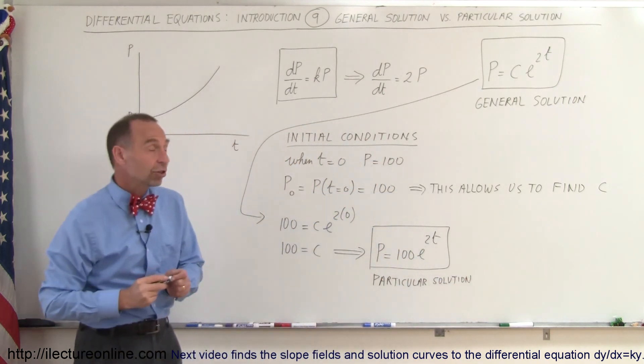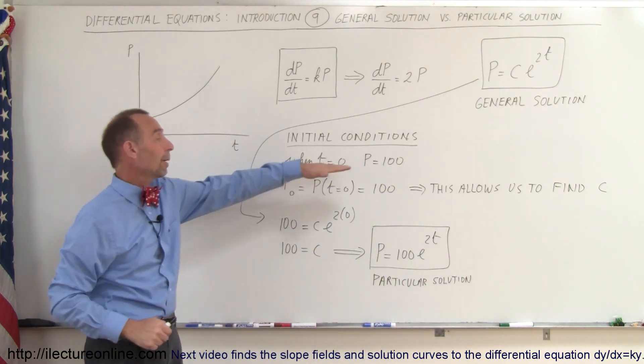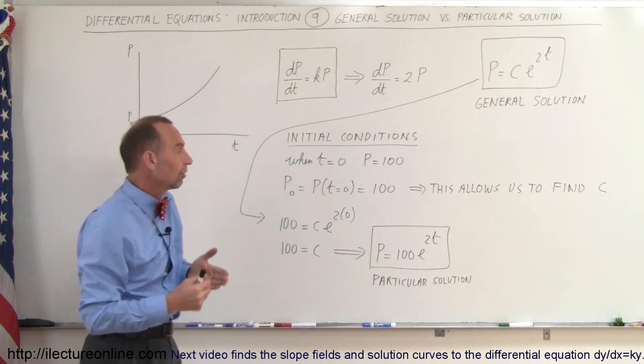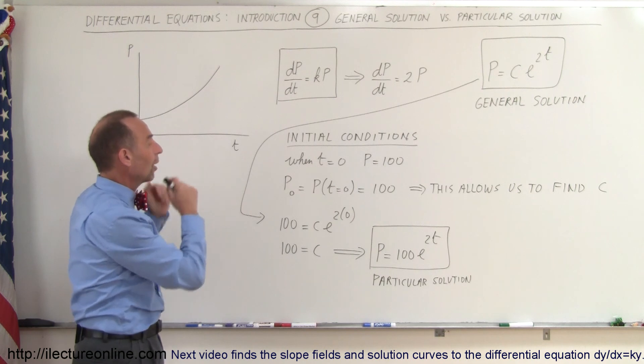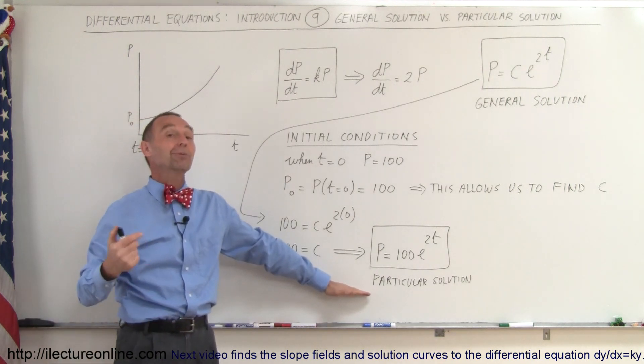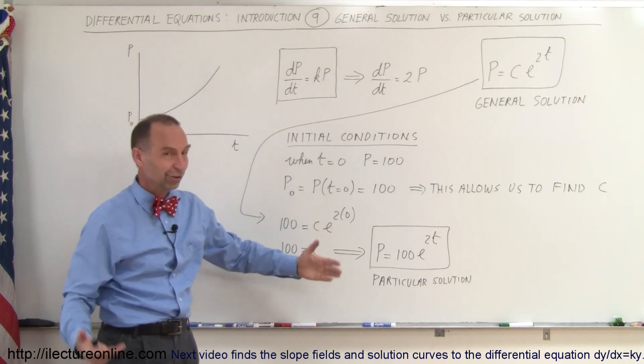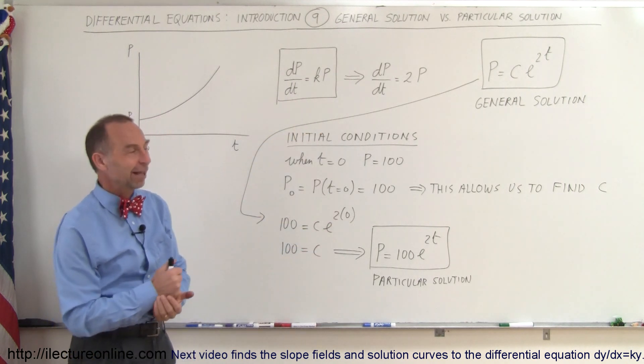So for this problem, given the initial conditions, that when time is equal to 0, the population is 100, this now becomes the solution to our differential equation related to our particular problem right here, and therefore this is called the particular solution. All right, general solution, particular solution, now you know the difference, and that's how it's done.